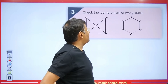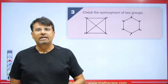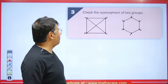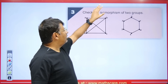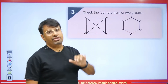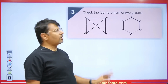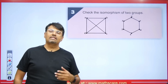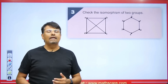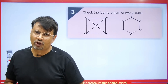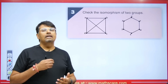The next question asks to check the isomorphism of two graphs. Here the first graph has 4 vertices and the second has 6 vertices. Since the number of vertices is not equal, there cannot be a one-to-one correspondence. For isomorphism, the number of vertices, edges, and degrees must all be equal. Since vertices are not equal here, these two graphs are not isomorphic.